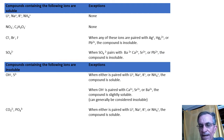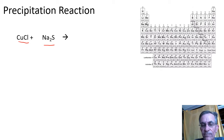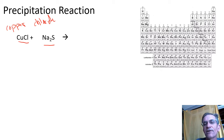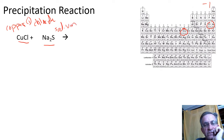Let me show you a reaction. We're going to be mixing CuCl with Na₂S. CuCl — copper is not a 'noise and forever' metal, so we need a Roman numeral. Chloride is -1, so copper has to be +1, making it copper(I) chloride. And Na₂S is sodium sulfide. So we're mixing copper(I) chloride with sodium sulfide.